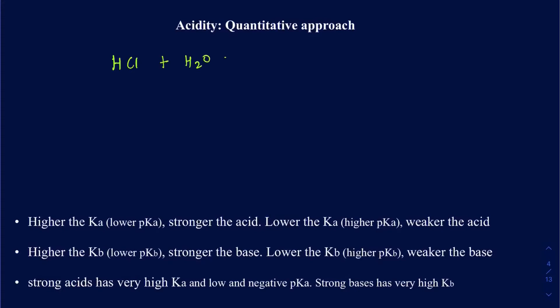When HCl reacts with water — or another way of saying, when you dissolve it in water — it reacts with water to make H3O+ and Cl-, both aqueous. Water is liquid, and we usually draw the arrow going one way, indicating that this is a very strong acid.